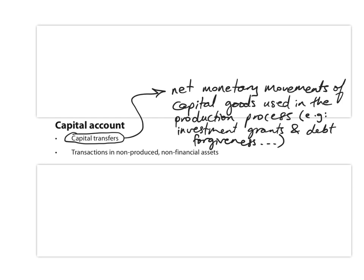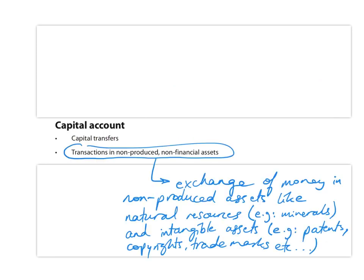The capital account consists of two sub-accounts. The first one is capital transfers. This refers to the net monetary movements of capital goods used in the production process. Examples include investment grants and debt forgiveness — when countries that you owe debt to forgive your debt. All those monetary movements of capital goods are recorded in the capital transfers sub-account of the capital account.